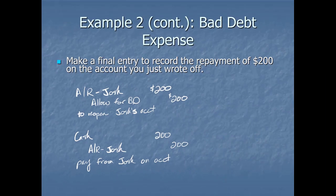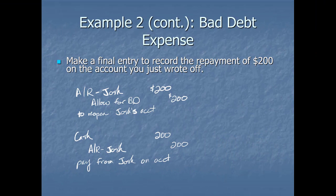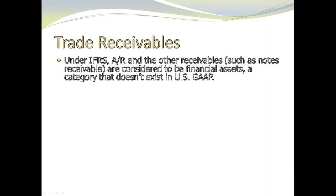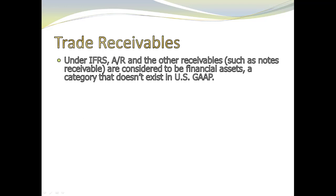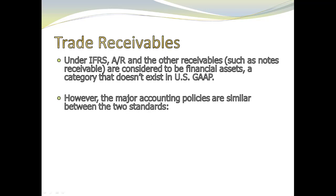Just briefly before we wrap this up, we want to talk just a little bit about IFRS. Under IFRS, accounts receivable and other receivables are considered financial assets. It's a category we don't really have under US GAAP. It's a special category under IFRS. Really, the policies are very similar, other than this different classification, except for a few minor differences. First, we call it an allowance for bad debt, they call it a provision for bad debt. Same idea, same methods, just a different title.